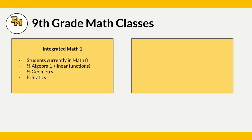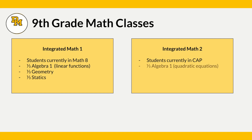The other math class students traditionally take in ninth grade is Integrated Math 2. This is for students in eighth grade who are in the CAP class or an accelerated eighth grade math class. This class is one-third Algebra 1 with a focus on quadratic equations, one-third geometry, and one-third probability.